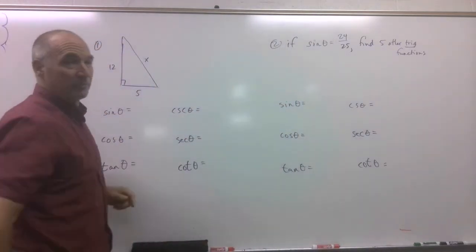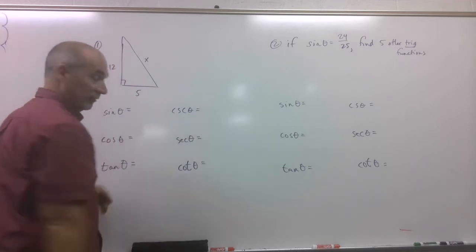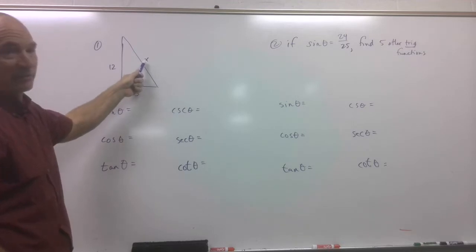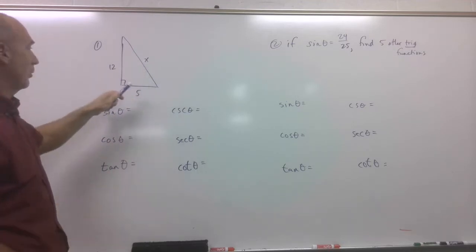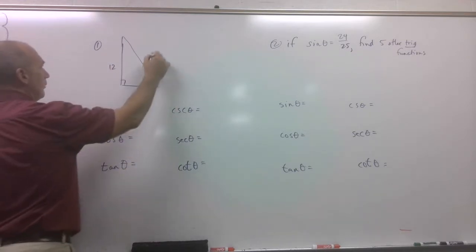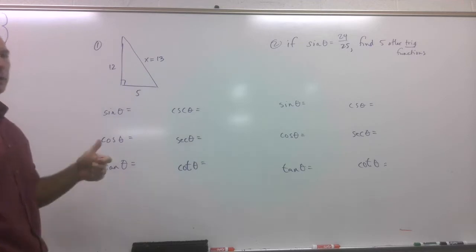This is your most basic type of problem. They give you the triangle, they say find all six of these trig functions. They want to make it a little difficult, they'll leave one of these sides out and then you gotta go A squared plus B squared equals C squared, or just recognize that's a family, 5, 12, 13, much better to know your family.